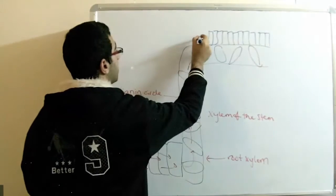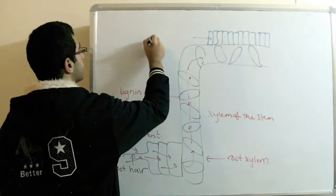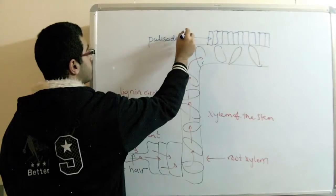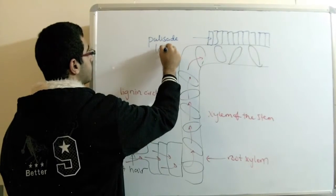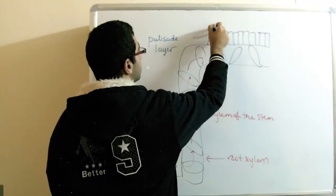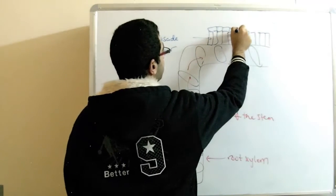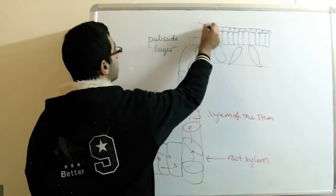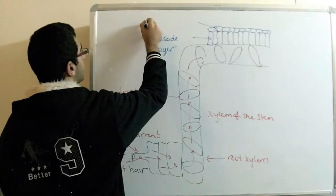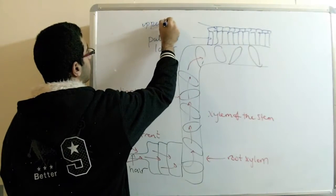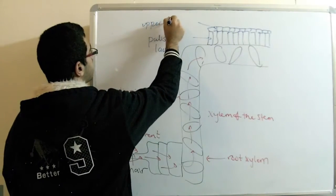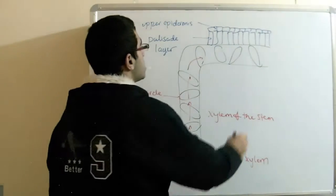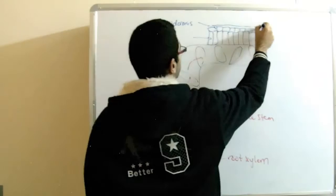Here we remember the structure of the leaves that we drew in the leaf structure part. So we have our palisade layer, which is covered by the upper epidermis.